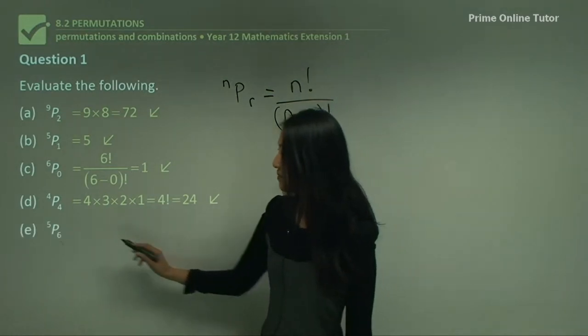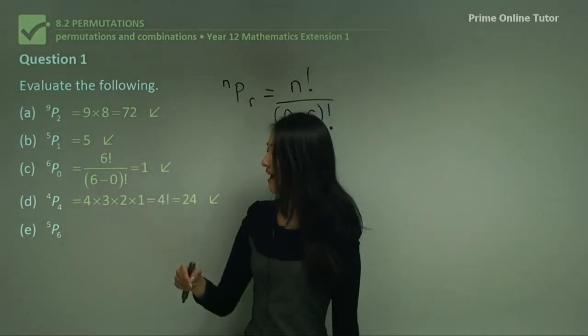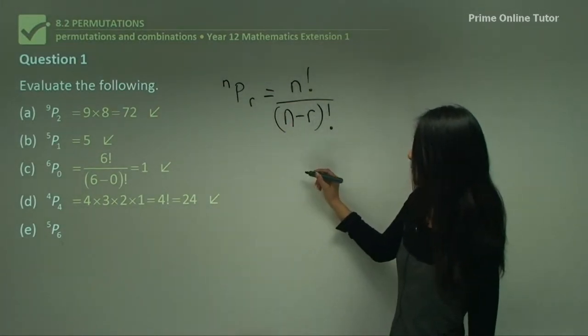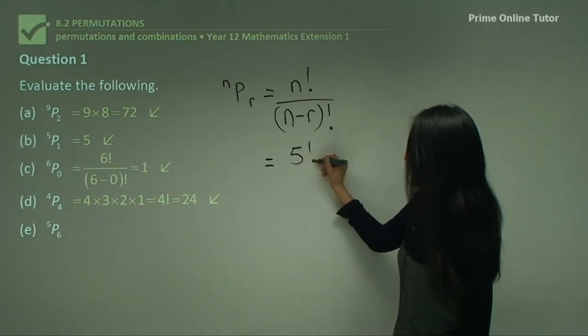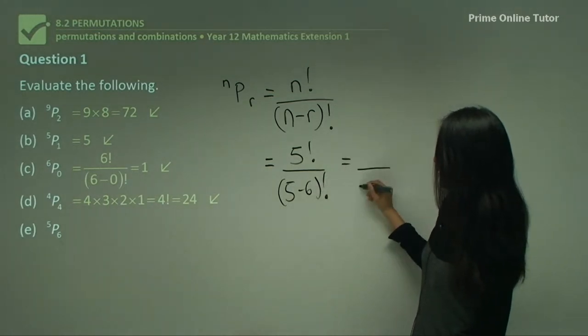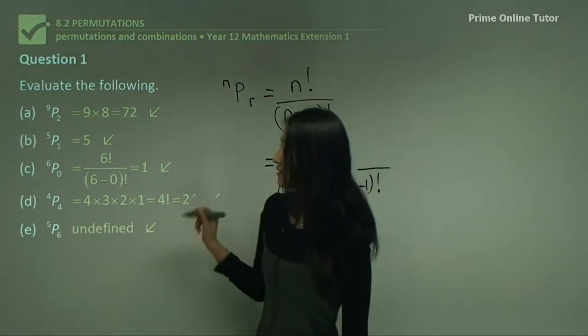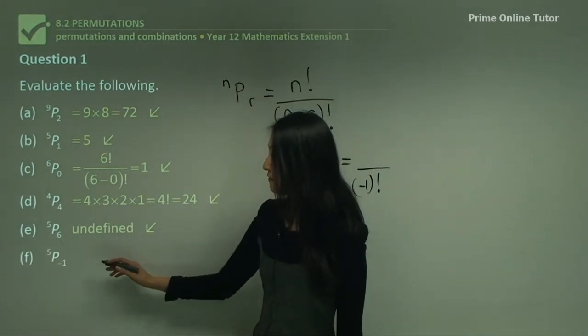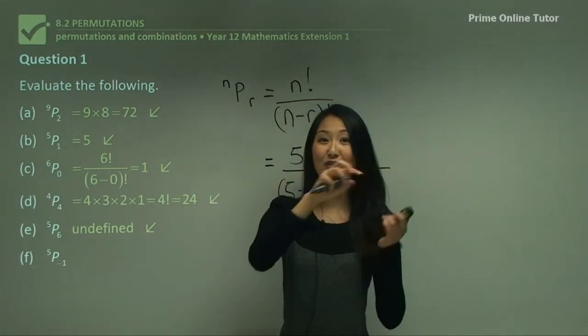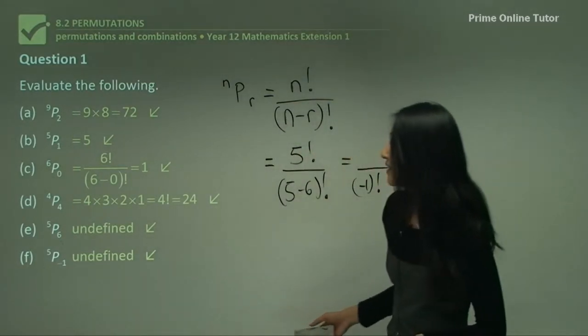What about ⁵P₆? If you consider that, you can't really have six numbers when you have 5 factorial because you run out after 1. When you consider it this way, that's 5!/(5-6)!, which means the denominator is -1!, and you can't have a negative factorial, so this one is undefined. What about ⁵P₋₁? You can't have a negative number for factorial, so in the same way, this is undefined as well.